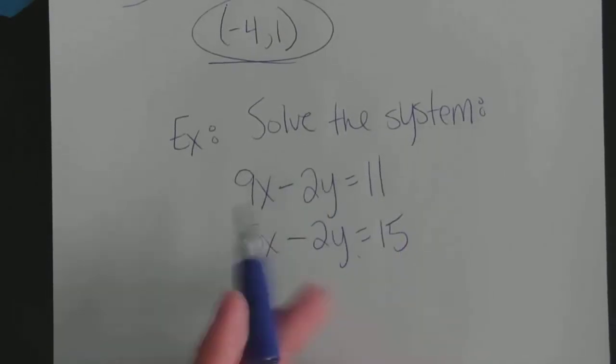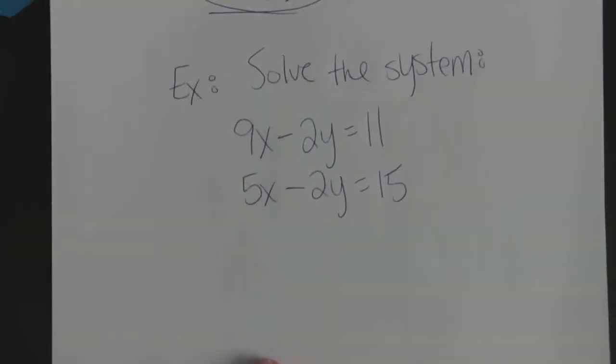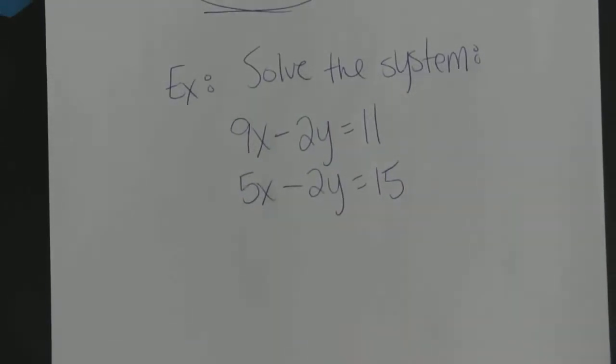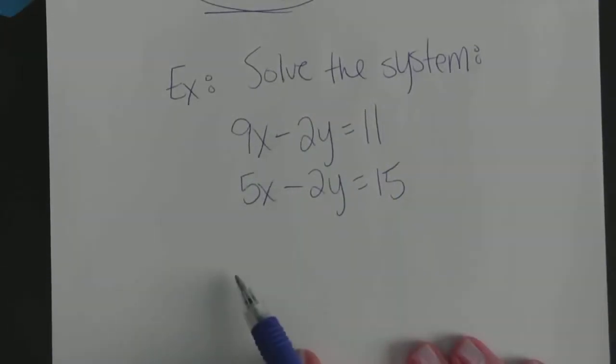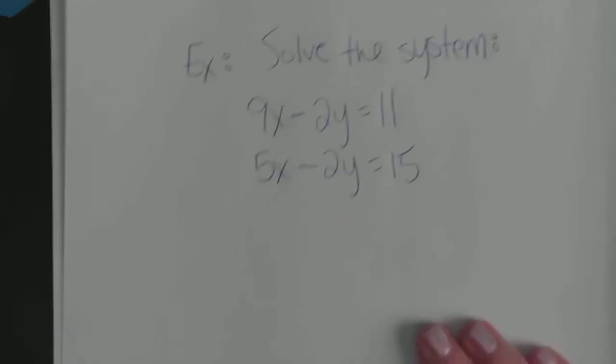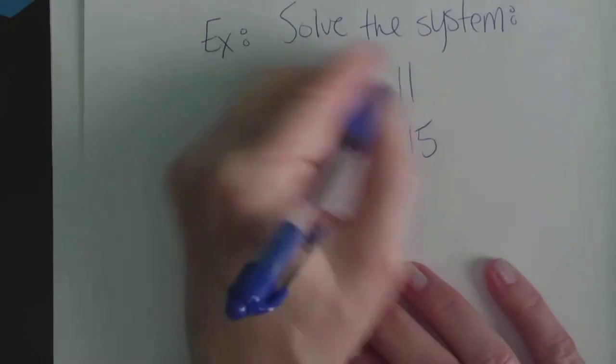Second example. Now we're going to solve this system. Very similar. 9X minus 2Y equals 11, 5X minus 2Y equals 15. Now just for kicks, let me show you something here. This is a pretty easy one to solve by hand. So I'm going to do that. Let me solve this one by hand as a reminder, and then we'll do it on the matrix.